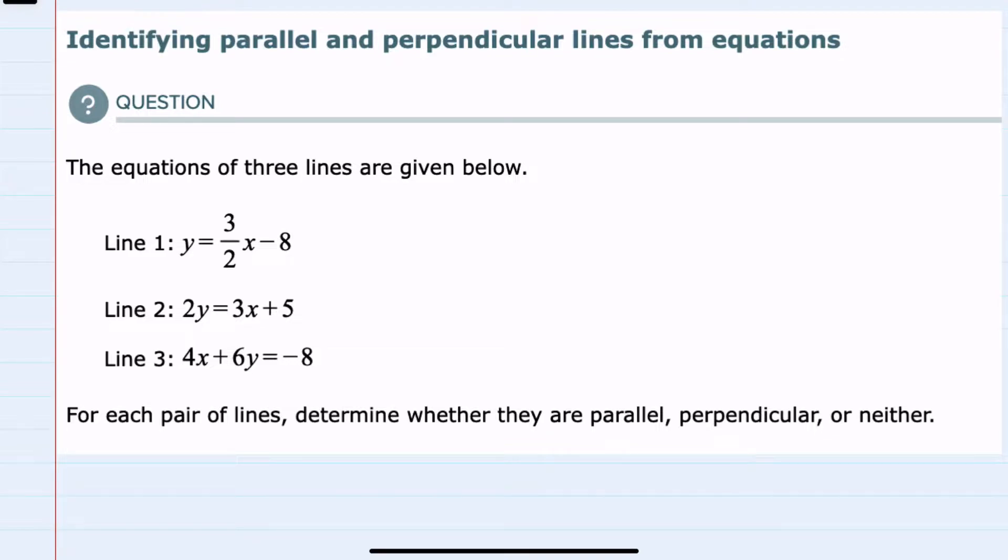To do so, I'll look at the slopes of each of the lines because I know for parallel lines, the slopes will be the same. So if one of the slopes is A over B, the other slope will also be A over B. So matching slopes.